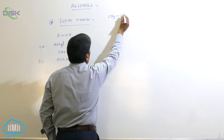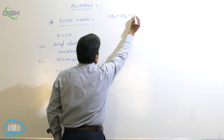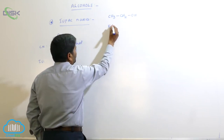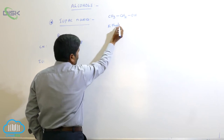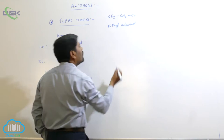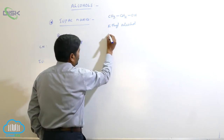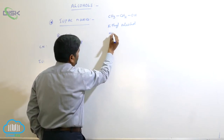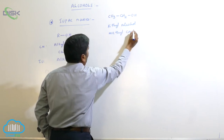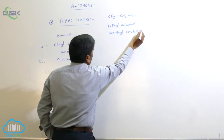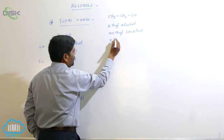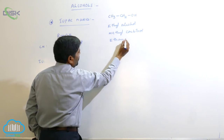Next: CH3-CH2OH — two carbons. The common name is ethyl alcohol. In the carbenol system, this is known as methyl carbenol. The IUPAC name is ethanol.